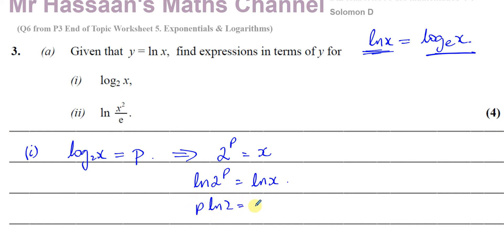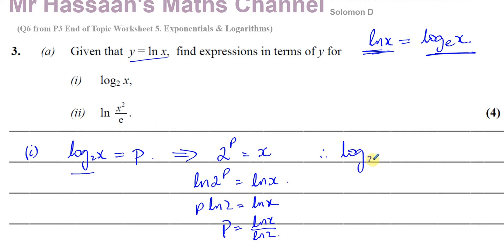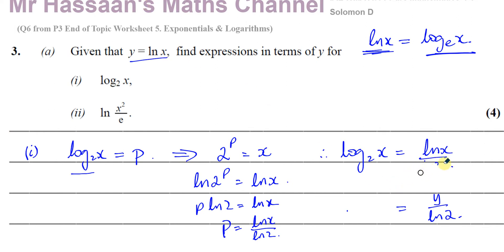Now I can rearrange using the power law: p times ln(2) equals ln(x). And then finally, p equals ln(x) over ln(2). We know that y equals ln(x), so I can say log base 2 of x equals ln(x) over ln(2), which is therefore equal to y over ln(2). So there we have the answer to part a — we've expressed log base 2 of x in terms of y by first changing the base to ln, then replacing ln(x) with y.